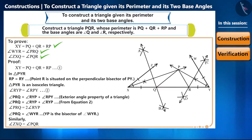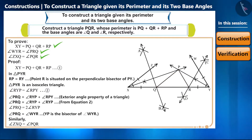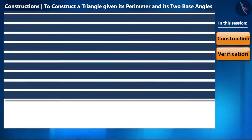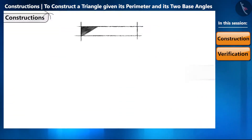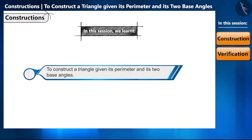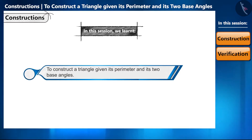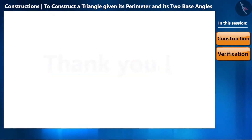In the next session we will solve some questions based on this construction and construct the triangle according to given measurements. In this session we learned to construct a triangle given its perimeter and its two base angles. Meet you in the next session. Thank you.